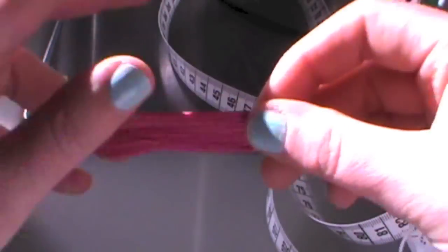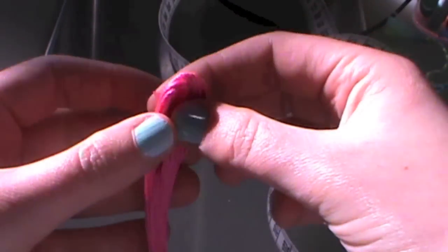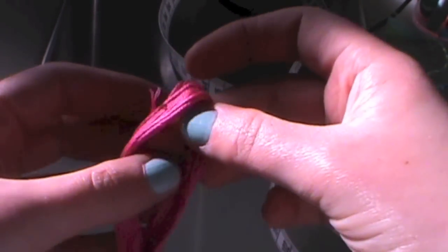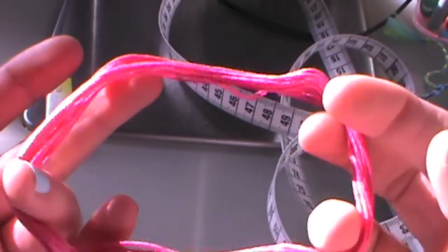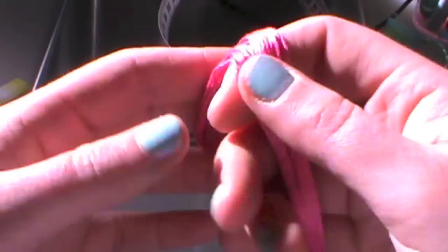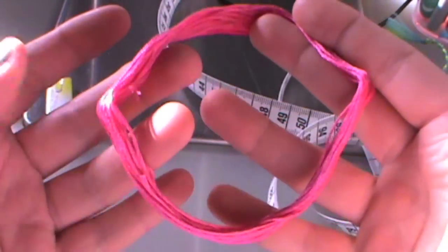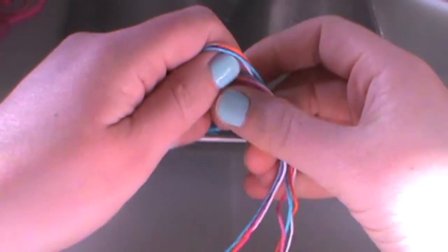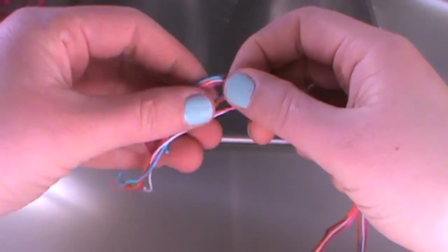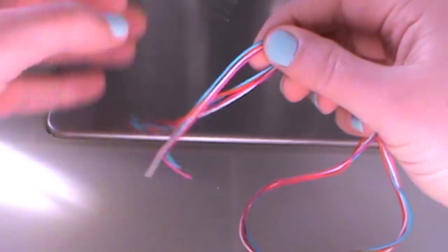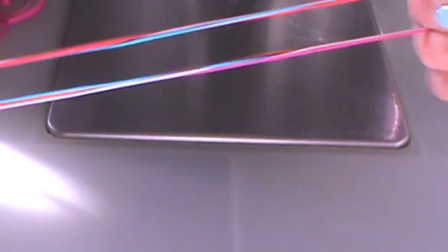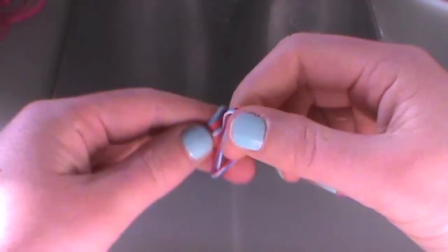I'm just going to measure up my pink embroidery floss here. I've already got my blue and orange. When you have all your pieces of embroidery floss, you size them up at the end to make sure they match.